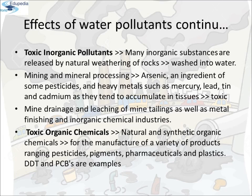Toxic Organic Chemicals: Many thousands of natural and synthetic organic chemicals are in use today for manufacture of a variety of products ranging from pesticides, pigments, pharmaceuticals, and plastics. Several of these are known to cause birth abnormalities, genetic defects, and cancer. Some chemicals like DDT and PCBs are concentrated in tissues to dangerous levels. Many are only very slowly biodegradable and persist in the environment for long periods of time.